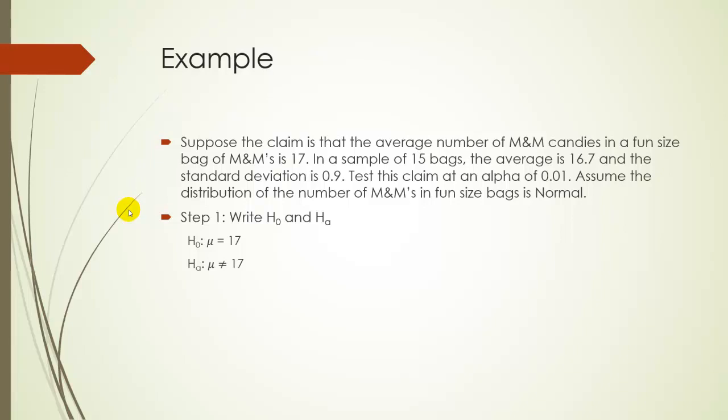For step one, we're going to write H0 and HA. H0 is that the true mean is equal to 17. And since they didn't specify what HA is, which way we want to test, it's implied that we're dealing with a two-tailed test. We're just trying to disprove the claim. So, we can do it either way, more than 17 or less than. So, not equal to is what we have to do.